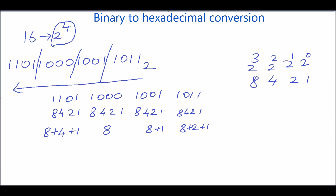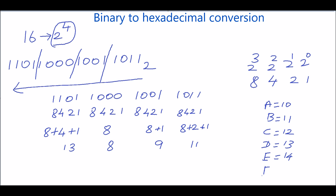Now sum each group: 1+2+8=11; 1+8=9; just 8; and 1+4+8=13. In the hexadecimal number system: A=10, B=11, C=12, D=13, E=14, F=15. So 11 can be written as B.